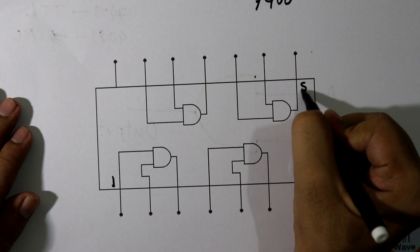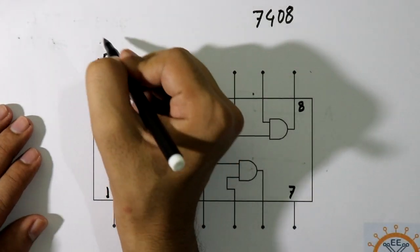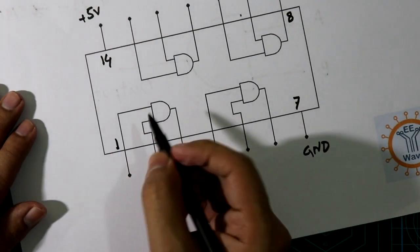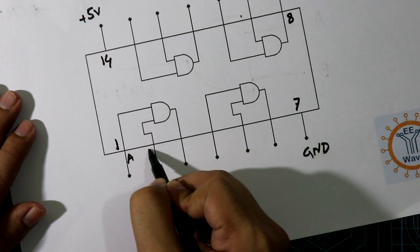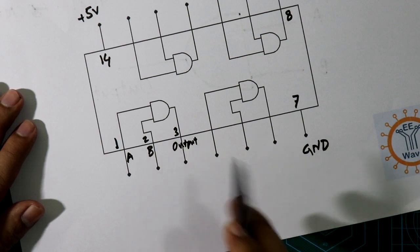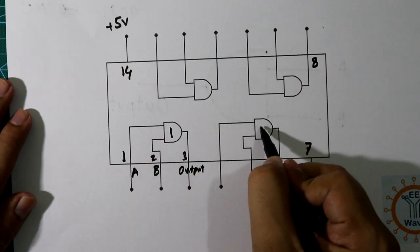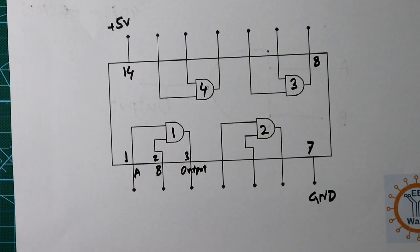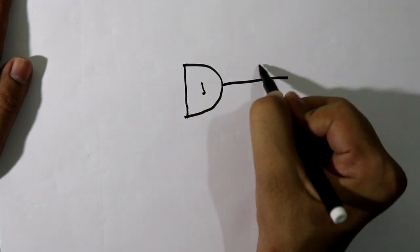This is the pin diagram of 7408. Pin number 1 up to pin number 7, and pin number 8 to pin number 14. Pin 14 should be connected to plus 5 volts and pin number 7 is ground. Here is input 1A, here is B, and pin number 3 is output. This IC has 4 AND gates: AND gate 1, AND gate 2, AND gate 3, and AND gate 4.